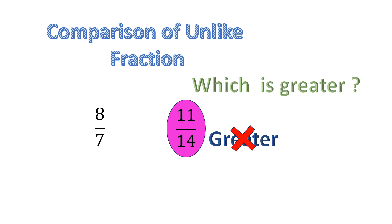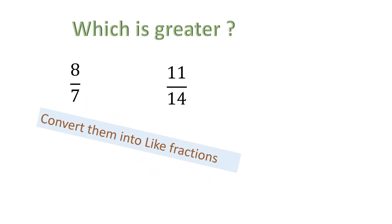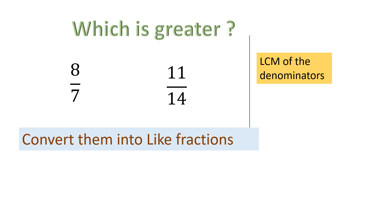When you see an unlike fraction where the denominators are different, you need to follow some steps to determine which fraction is greater, smaller, or if they are equal. The first thing you need to do is convert them into like fractions. Unlike fractions can be converted into like fractions by finding the LCM of the denominators.